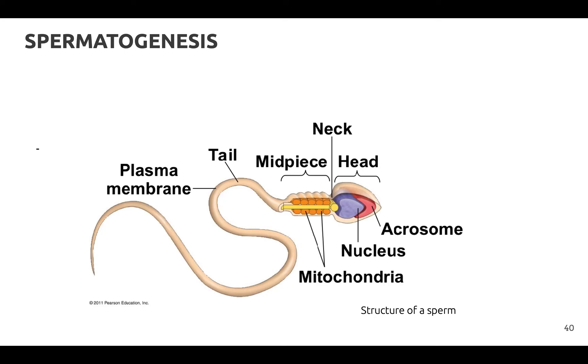Here is the structure of a sperm cell: it has a nucleus, mitochondria, a neck, head, midpiece, tail, plasma membrane, and the acrosome.